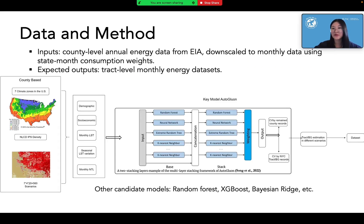To do so, we use this research framework, where baseline energy data is from EIA, combined with nighttime light data and surface temperature data, and other ACS social demographic factors as key inputs. Our candidate models mainly include tree-based random forests, XGBoost, and the assembled model AutoGluon. The last one is proved to be more stable across years and scales, improving the R-squared from 0.4 to 0.7, which leads us to use AutoGluon to predict our products at monthly tract level.